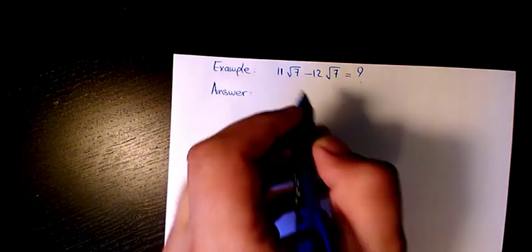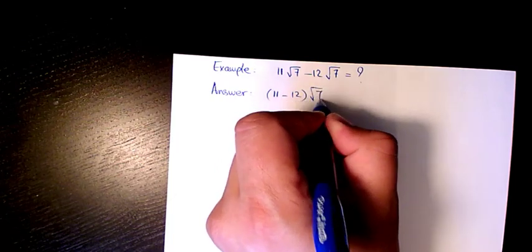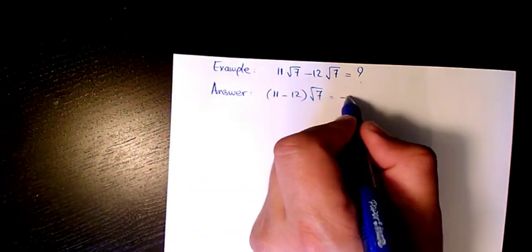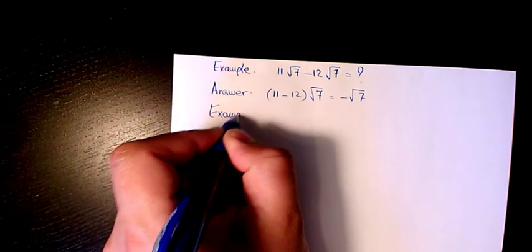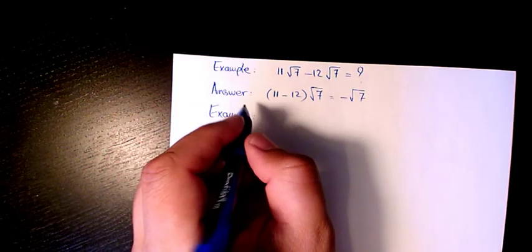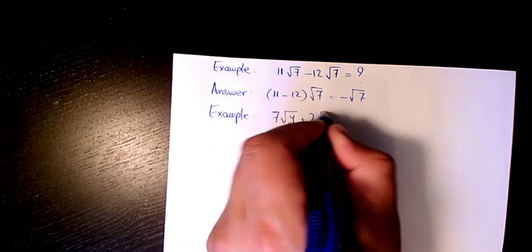The answer will be 11 minus 12 root 7, that will make it negative root 7. Next example is 7 root y plus 2 root y.